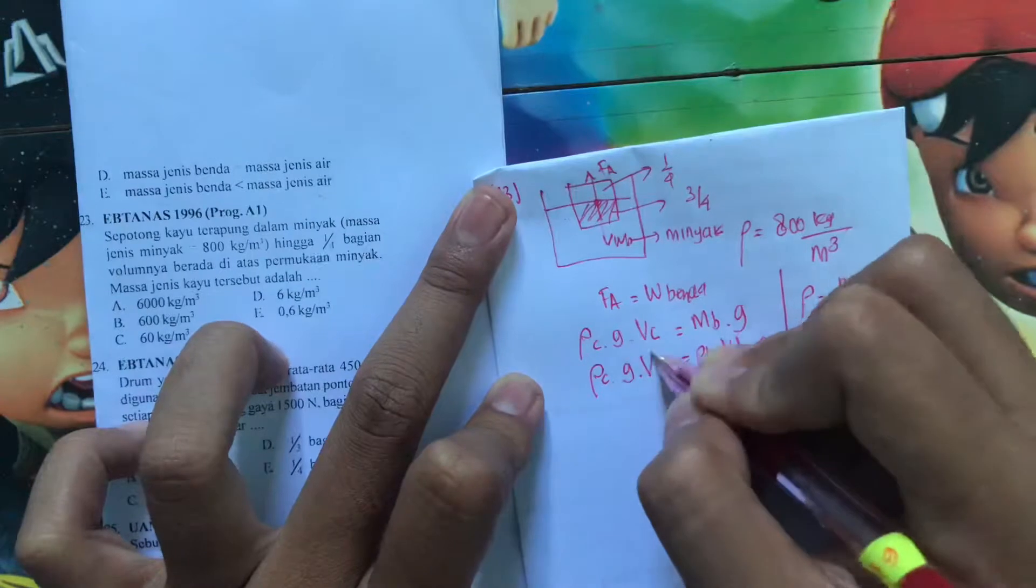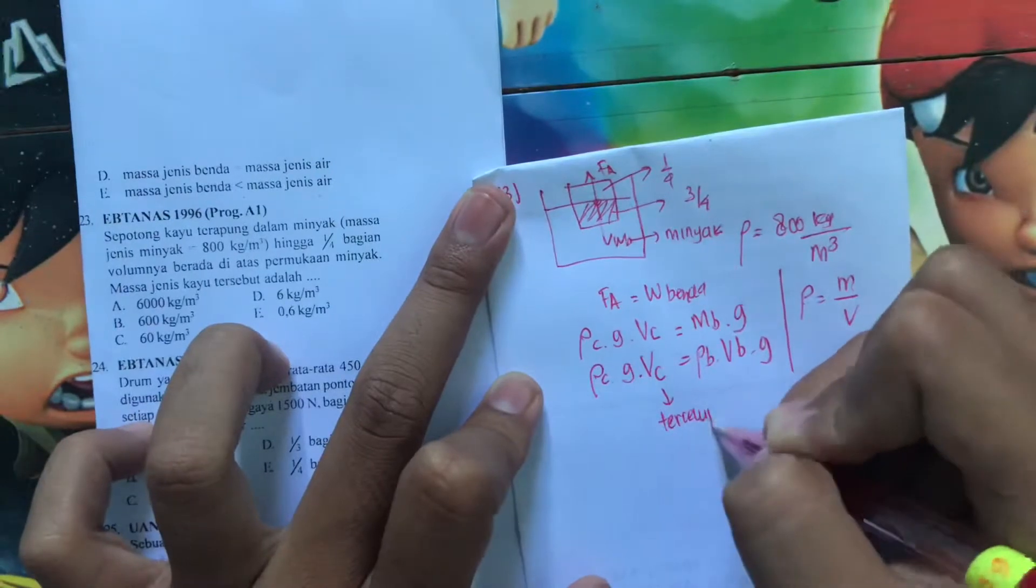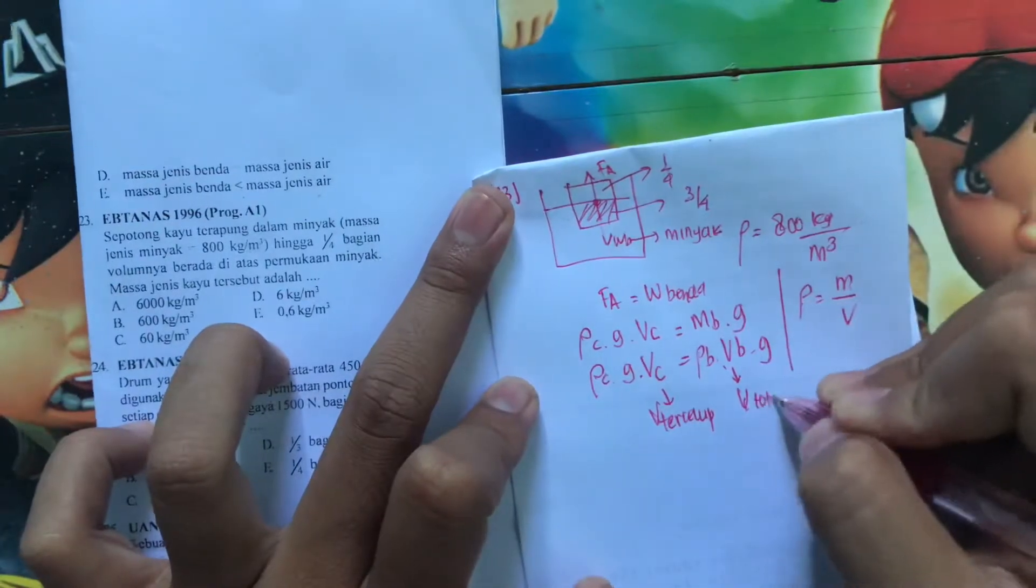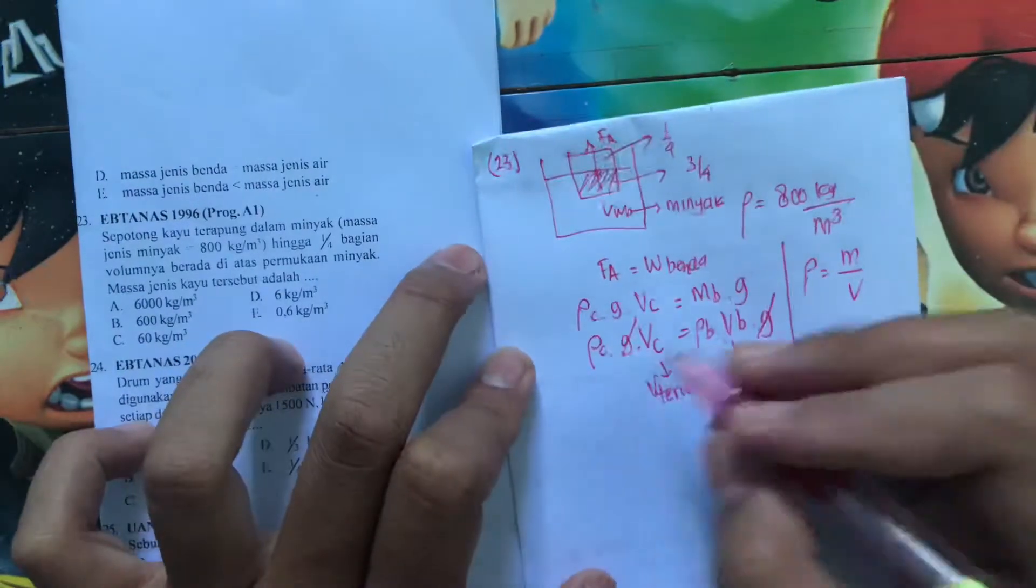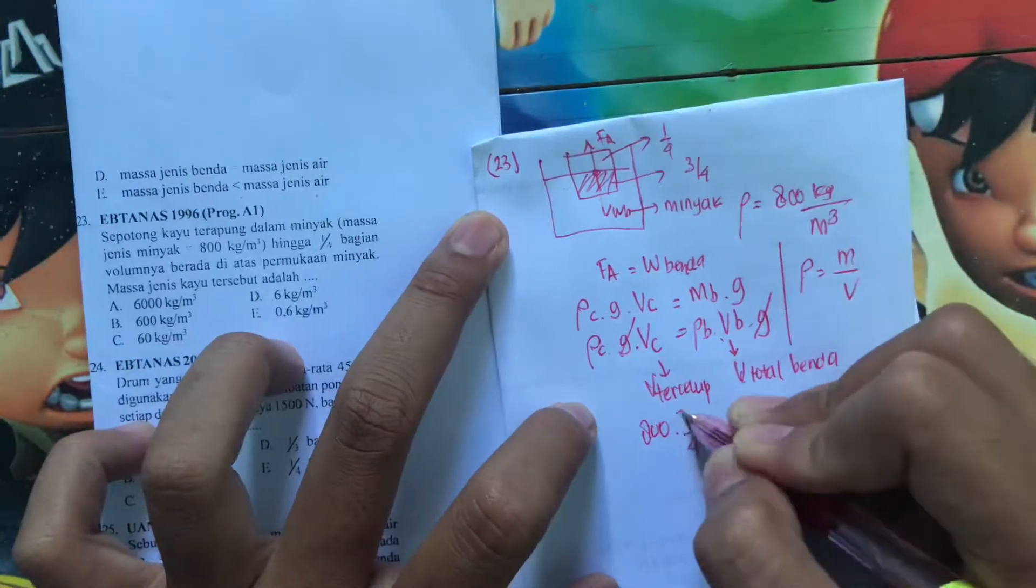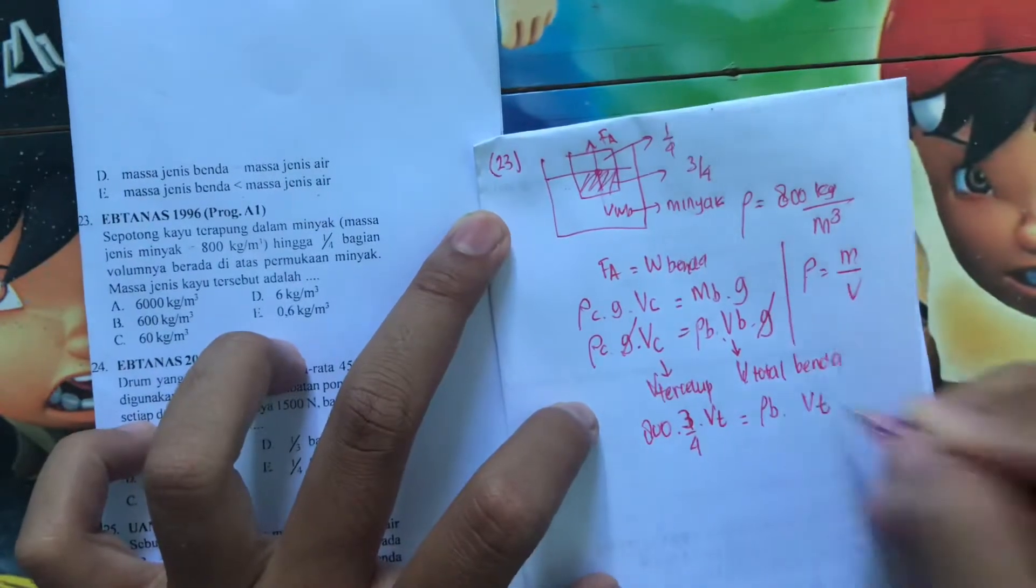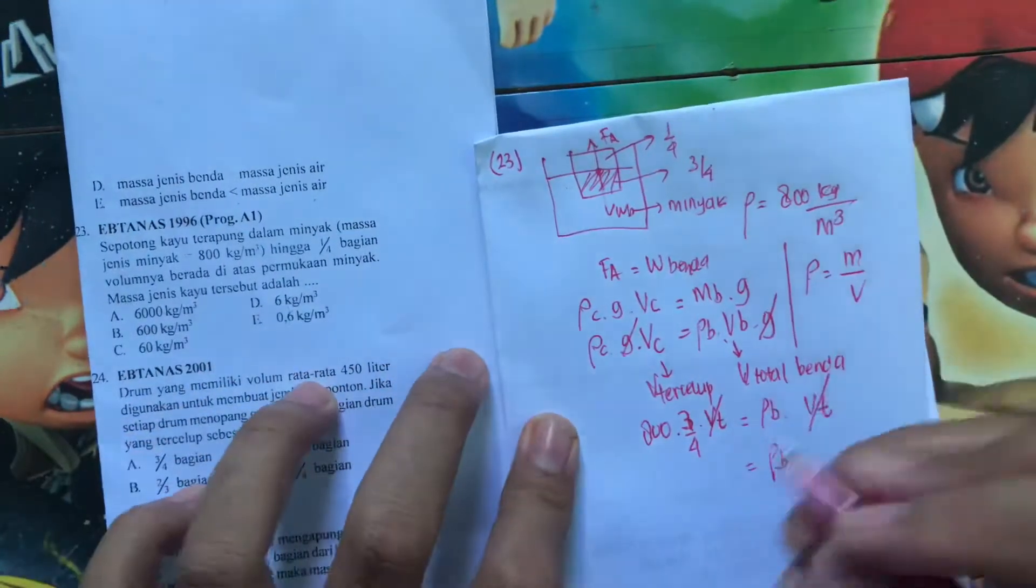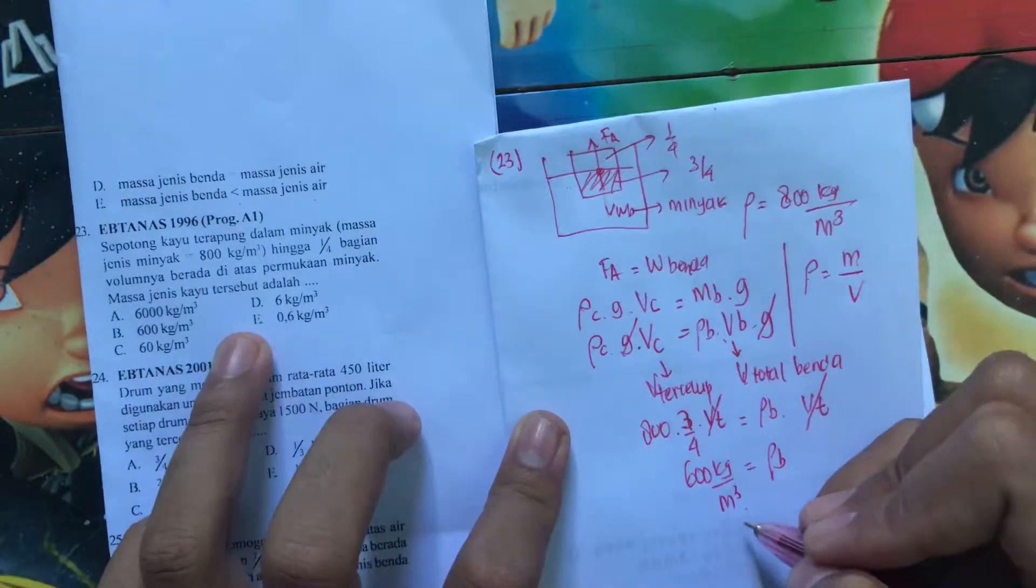Berarti rho benda kali volume benda kali gravitasi sama dengan rho cairan kali gravitasi kali volume tercelup. Ini tercelup, kalau ini volume total benda. Gravitasi bisa kita coretkan. Berarti sisanya adalah ini kan rho cairan 800. Volume tercelup 3 per 4 volume total. Rho bendanya kita ditanyain. Volume totalnya ya volume total. Berarti kita coretkan. Berarti rho bendanya adalah 3 per 4 dari 800. Berarti berapa? 600 kg per meter kubik. Berarti jawabannya adalah yang B.